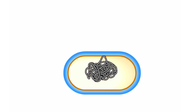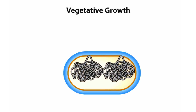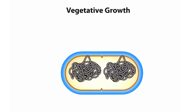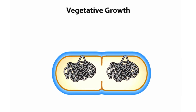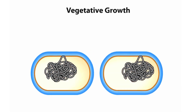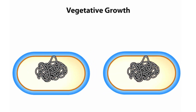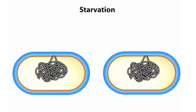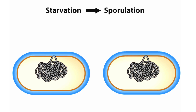When growing in rich medium, these microbes undergo normal vegetative growth. Bacillus subtilis can replicate every 30 to 60 minutes. In contrast, starvation initiates sporulation, an elaborate 8-hour genetic program that ultimately yields a spore.